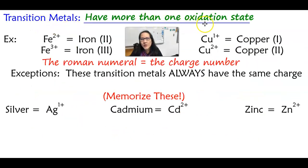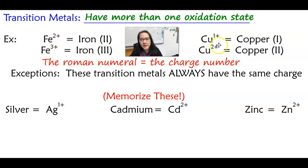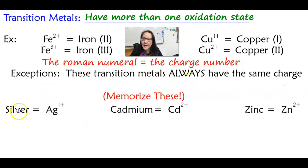Transition metals have more than one oxidation state. For example, iron could be Fe with a plus two charge, or Fe with a plus three charge, and we denote this with a Roman numeral. Iron (II) means Fe has a plus two; iron (III) means Fe has a plus three. Similarly, copper (I) is copper with a plus one charge; copper (II) is copper with a plus two charge. Some exceptions are certain transition metals that always have the same charge — silver has no Roman numeral and only has a plus one charge; cadmium only exists as plus two; and zinc only exists as plus two as well. These three you must memorize.